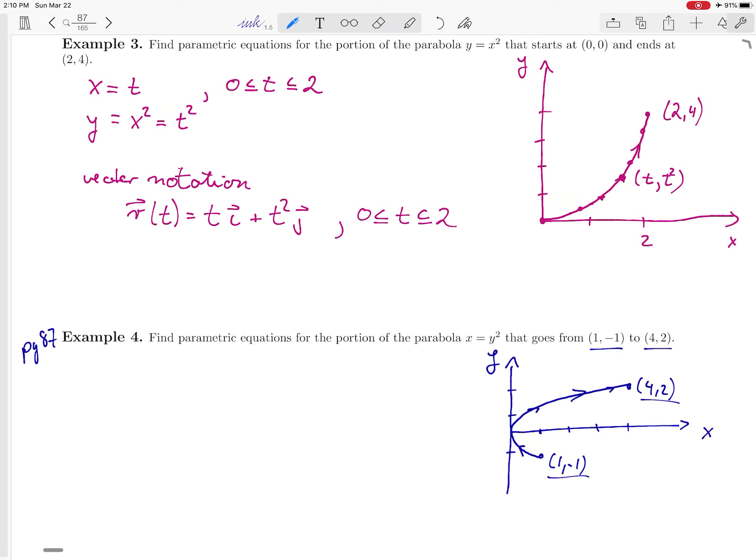How do I describe that? Well, in the previous example, when we had y equal to x squared, we let x be equal to t.